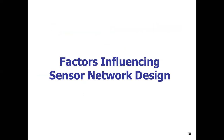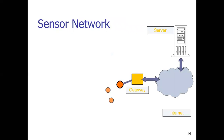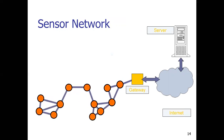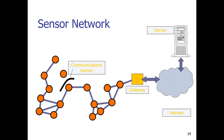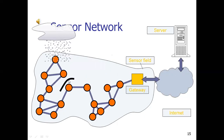Next, we will look at factors influencing sensor network design — what factors to consider before deploying any wireless sensor network. First, let's see the architecture of a sensor network. A sensor network basically consists of nodes, called sensor nodes. Several nodes are deployed in a given area and communicate with each other wirelessly. One node is connected to the internet and is called a gateway or sink node. This sensor field consists of nodes talking to each other, and any failed connection is routed around.